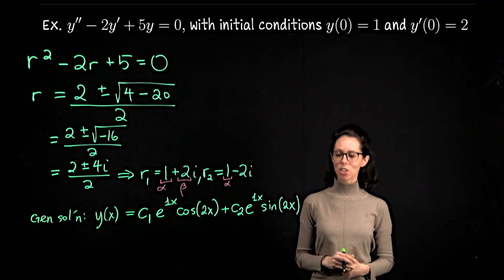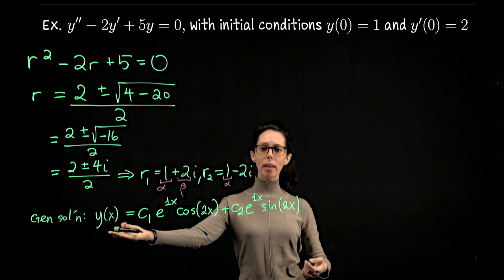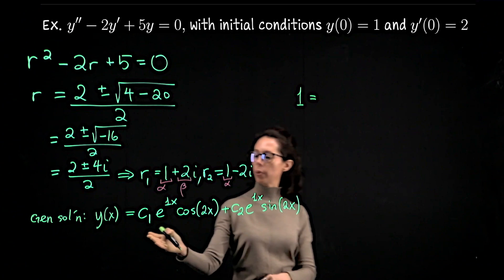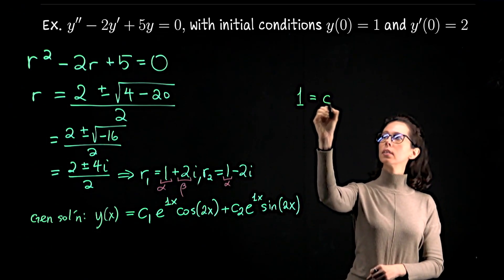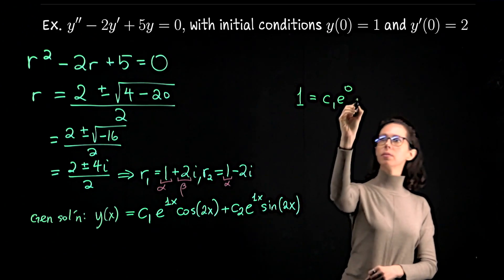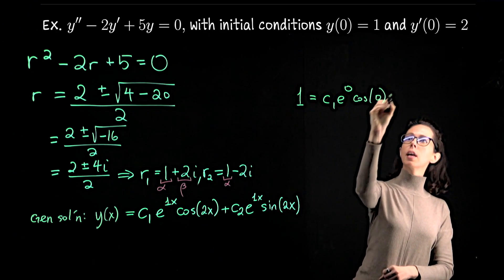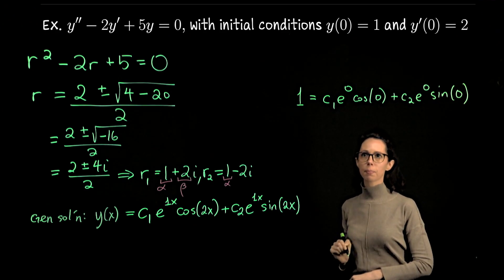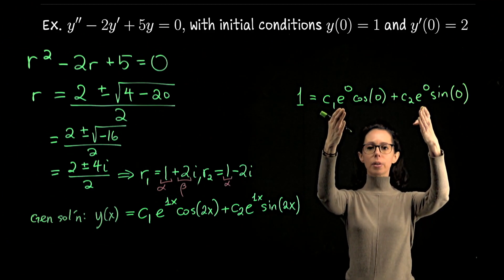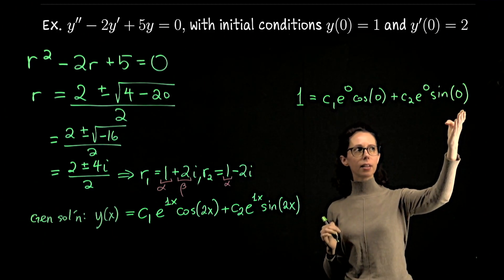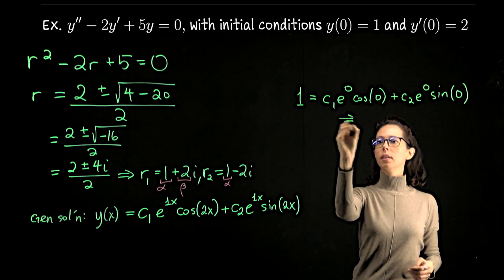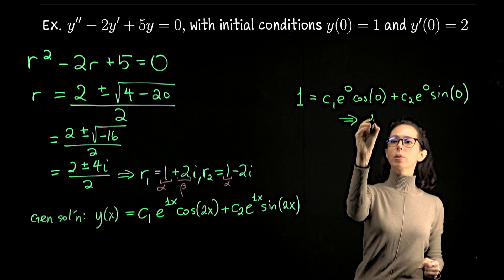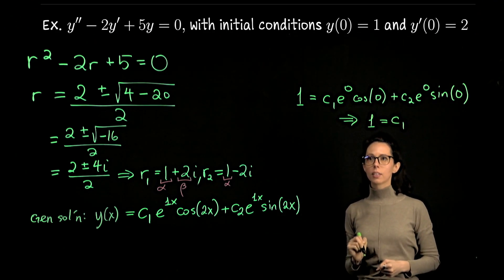Applying the first initial condition y(0) = 1: substituting x = 0 gives c₁ · e⁰ · cos(0) + c₂ · e⁰ · sin(0) = 1. Since e⁰ = 1, cos(0) = 1, and sin(0) = 0, this simplifies to c₁ · 1 · 1 + 0 = 1, so c₁ = 1.